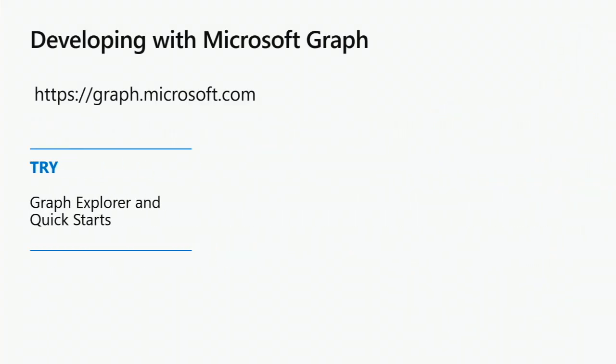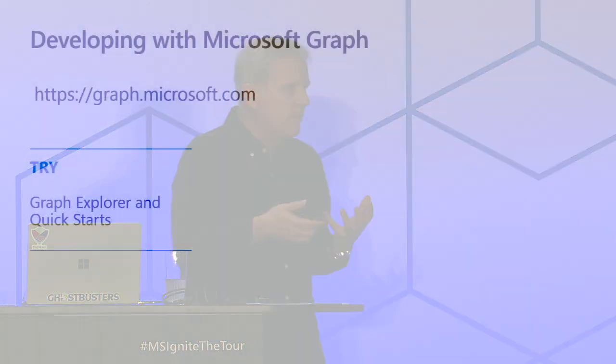Let's move to getting started. When you want to get started developing with the Microsoft Graph, there are several ways to do it. The first is to start with the Graph Explorer or the Quick Starts. The Graph Explorer is an application that allows you to write a query or run some predefined queries and see the results — always a JSON payload that includes the attributes of the entities you retrieved. Quick Starts are prepackaged applications around Office 365 that let you get up and running very quickly just to get a feel for things.